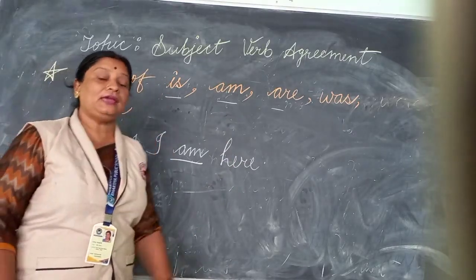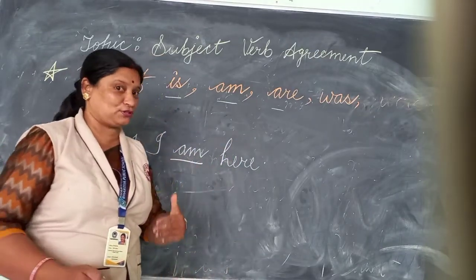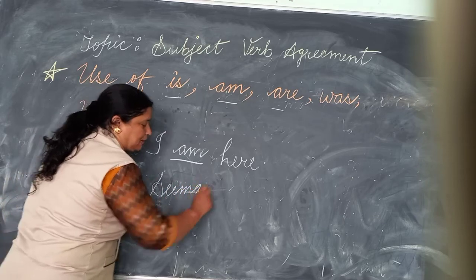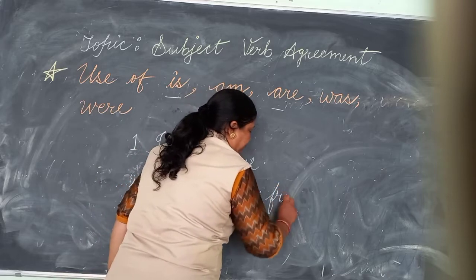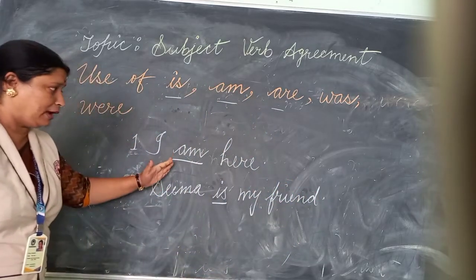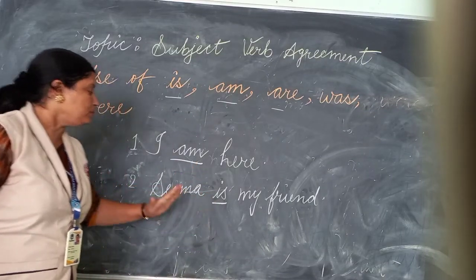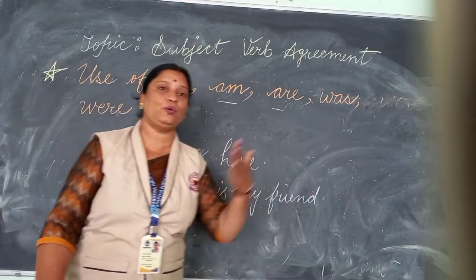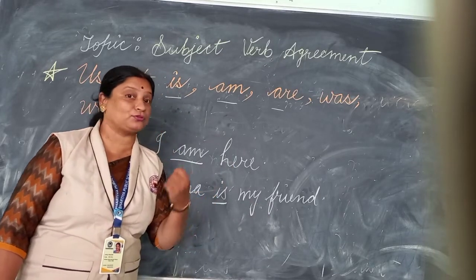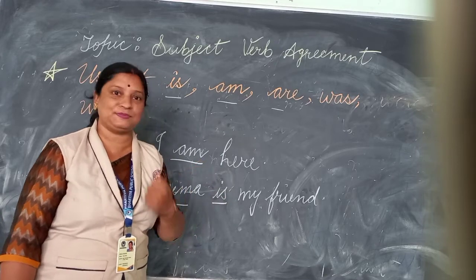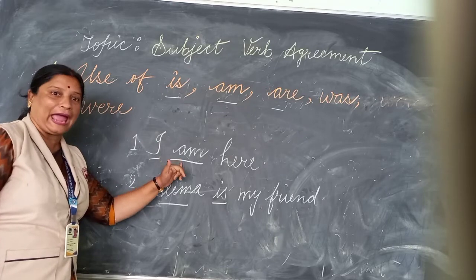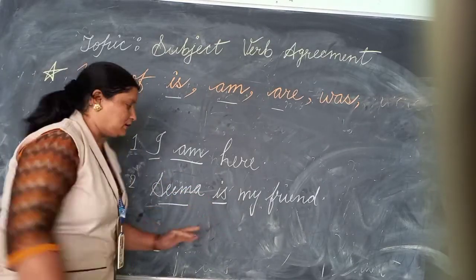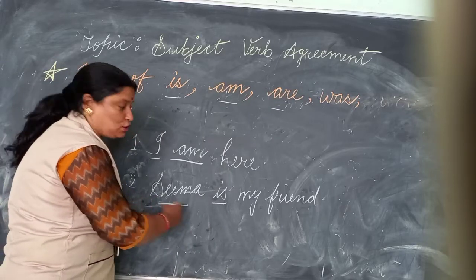Now next is the word 'is.' For example: Sima is my best friend. It means right now she is my best friend — I am talking about present time. So I write: Sima is my friend. The naming part of a sentence is called the subject. Who is doing the action, about whom we are talking — that is the subject. Here the subject is singular, so we use is. We use verb according to the subject. If the subject is singular, the verb will be singular. Sima is singular, so I have used is.